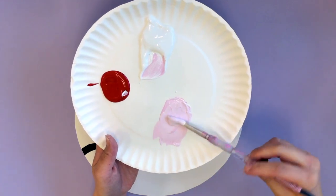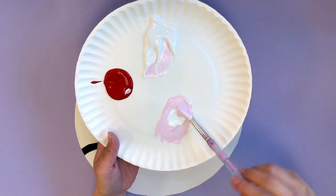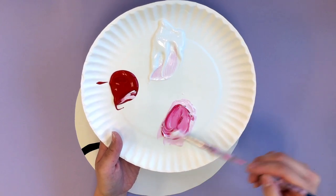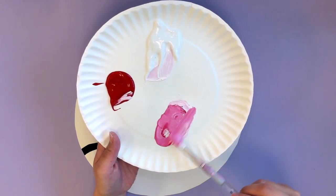For our next part, what we're going to do is we're going to go ahead and take that white again, put it into the pile we just mixed, and I'm going to take a bigger scoop of red this time. This is going to make a darker tint of pink.